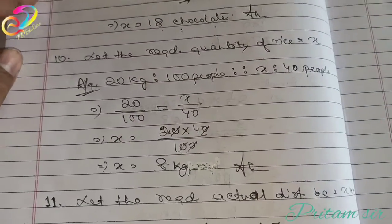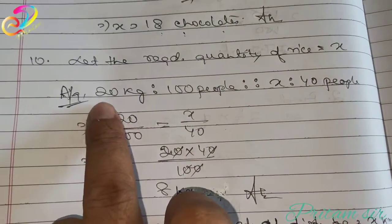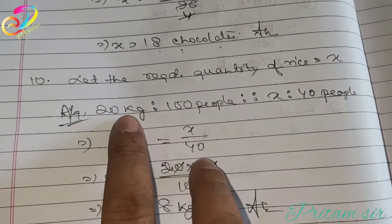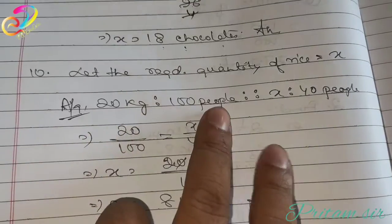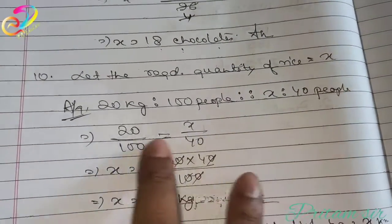So, the solution is, let the required quantity of rice be x. Then according to question, 20 kg rice is for 100 people, then x kg of rice is for 40 people.